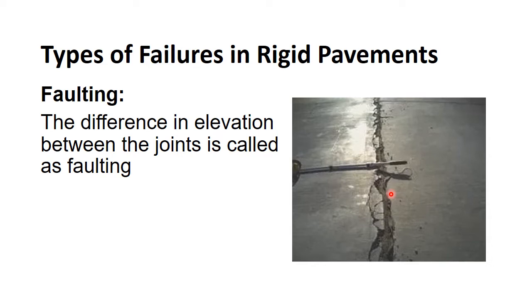Dowel bar retrofitting is required if faulting is between 4 mm and 12.5 mm. If faulting exceeds 12.5 mm, complete reconstruction of the slab is necessary.